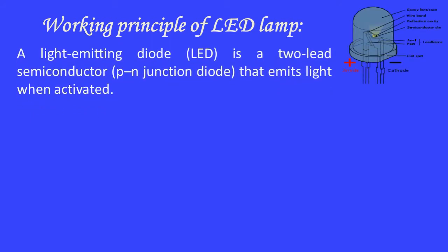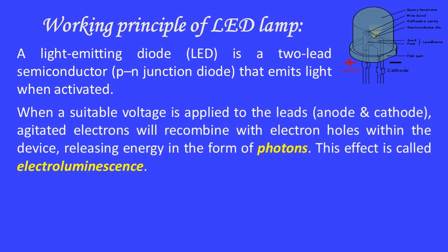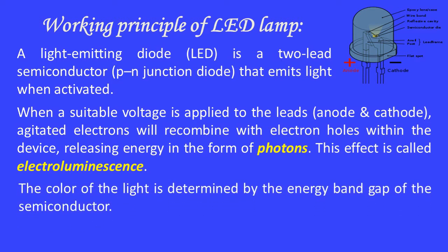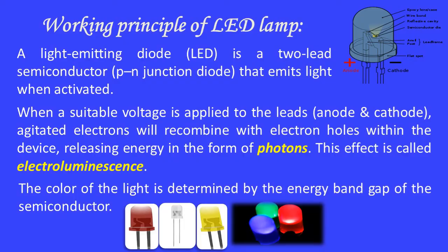A light-emitting diode (LED) is a two-terminal semiconductor PN junction diode that emits light when activated. When a suitable voltage is applied to the leads — anode and cathode — agitated electrons recombine with electron holes within the device, releasing energy in the form of photons. This effect is called electroluminescence. The color of light is determined by the energy band gap of the semiconductor.